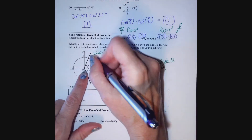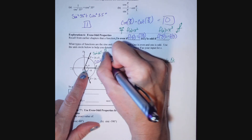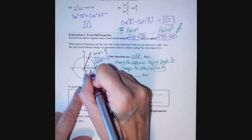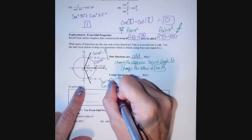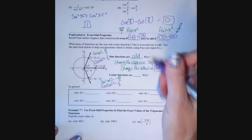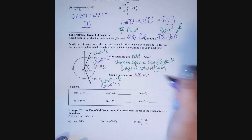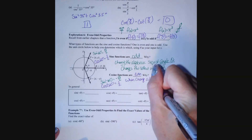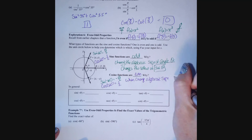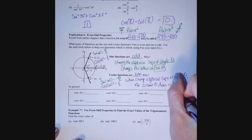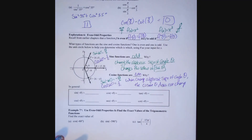For cosine: cosine of 60 degrees is 1 half. Cosine of negative 60 degrees is still positive 1 half because in quadrant 4, cosine remains positive. Cosine is an even function because changing the sign of the angle does not change the cosine value. Cosine of negative theta equals cosine theta.